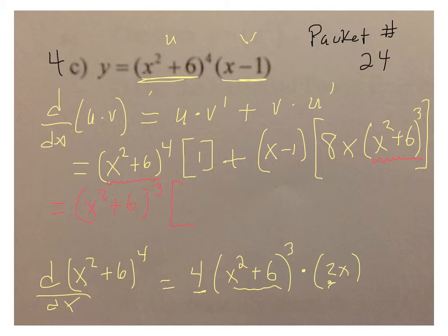Then I'd be left with, inside, an x squared plus 6, because these two multiplied together would give me the x squared plus 6 to the 4th. The times 1 is inconsequential, I can leave that out. And then I'd have an 8x, and then I'd have the x minus 1, and that last term, the x squared plus 6 to the 3rd, is accounted for right here.